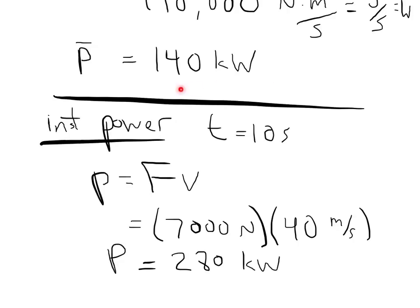The average power is 140 kilowatts, and the instantaneous power at the end of 10 seconds — when the car is still accelerating but reaching its peak speed — is twice as much at 280 kilowatts. The reason is that instantaneous power goes as the velocity: as velocity increases, the power output must also increase. So the power produced at the end, when velocity is high, is much greater than the power produced at the beginning when the velocity is low.